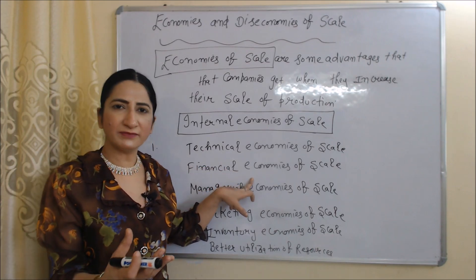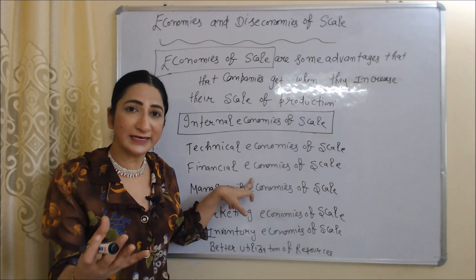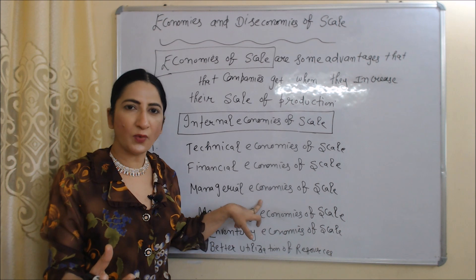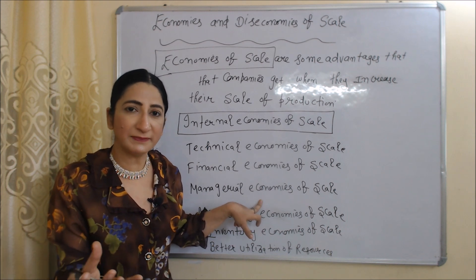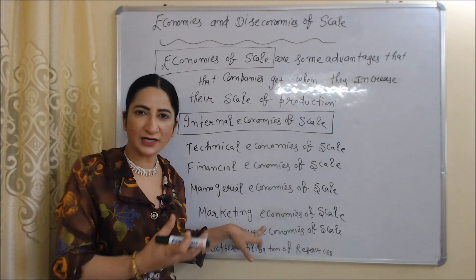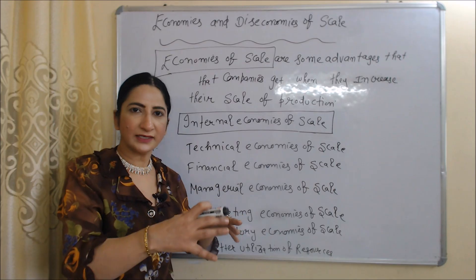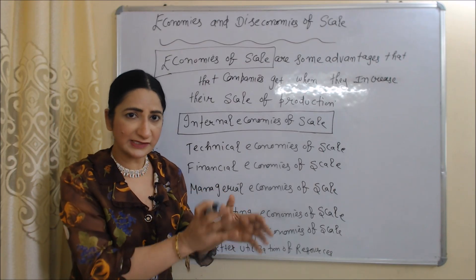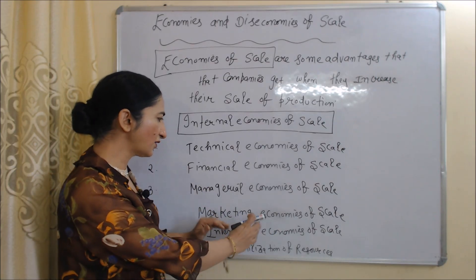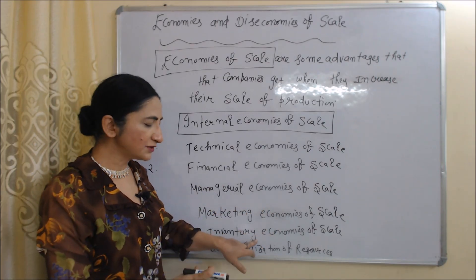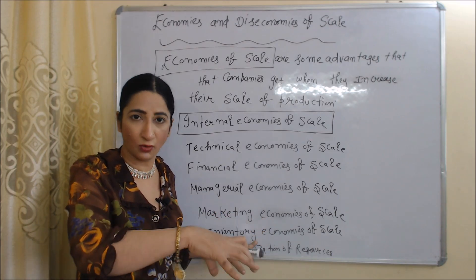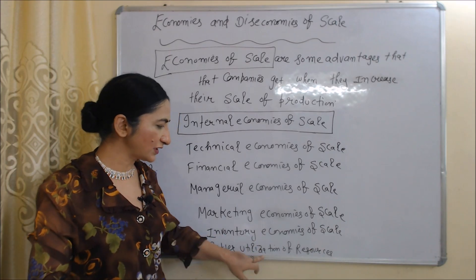Financial economies of scale means when large firms get loans at a lower interest rate. Managing economies of scale means when large firms can hire people with a specific skill set. Marketing economies of scale means when large firms increase their market by opening many branches and reduce their advertisement and promotional costs. Inventory economies of scale — large firms can get raw material at a lower cost. Last is better utilization of resources, as large firms can utilize their resources in the best way.